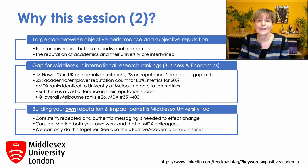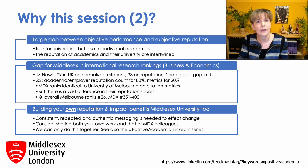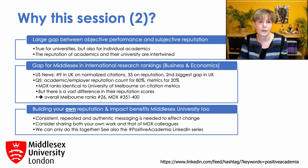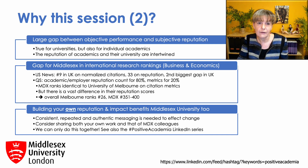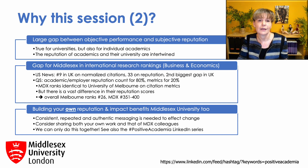To give you an example of this discrepancy between objective and subjective reputation, let's look at the Middlesex University ranking in the field of business and economics on two of the important international research rankings that include both metrics and reputation components. These reputation components are based on surveys of academics. In the 2022 US News ranking, there are 39 universities in the UK that are ranked in business and economics. Middlesex ranks ninth in terms of citation metrics, but only 33rd in terms of reputation. This is the second biggest gap in the UK.